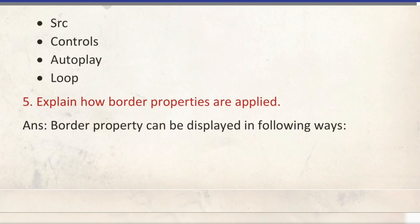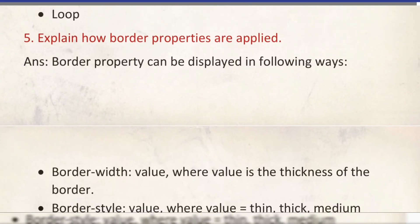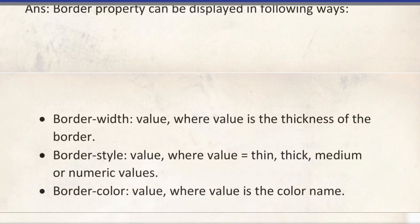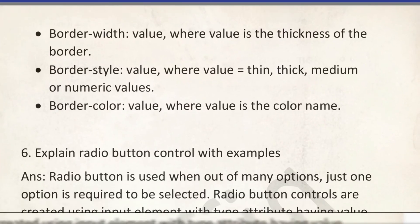Number 5: explain the border property and how border properties are applied. Border properties can be applied using three: first, border-width — we write the value like thick or thin; border-width where we write the thickness, like 2, 3, etc.; and border-style — it can be thin, thick, medium, etc. Border-color will be the color of the border.